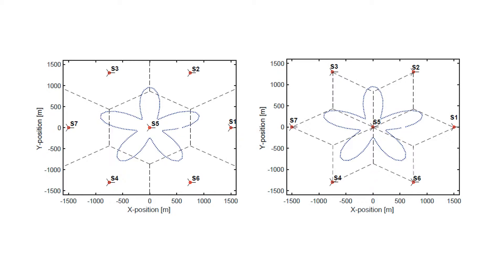We have simulated an LTE deployment as presented in these figures. We assume that the mobile station is moving on a predefined trajectory with a flower-shaped structure as depicted with dotted blue lines. The flower shape of the trajectory is selected to excite key aspects of positioning based on time of flight and time difference of arrival, and can be a relevant reference scenario for comparative performance evaluations.